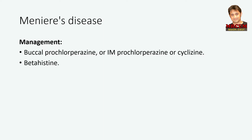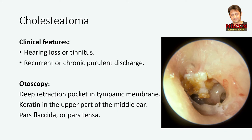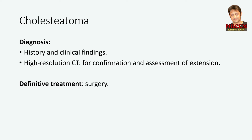Let's move to cholesteatoma. Cholesteatoma is defined as the presence of keratinizing squamous epithelium within the middle ear or in other pneumatized areas of the temporal bone. Clinical features include hearing loss or tinnitus, and recurrent or chronic purulent ear discharge, which may be unresponsive to antibiotic therapy. Discharge is malodorous and may be scant. Otoscopy typically shows a deep retraction pocket in the tympanic membrane, with or without granulation tissue and skin debris, crust or keratin in the pars flaccida or pars tensa, with or without a perforation. The diagnosis is based on history and clinical findings. High-resolution CT scan is used for confirmation and assessment of extension. The definitive treatment of cholesteatoma is surgery.